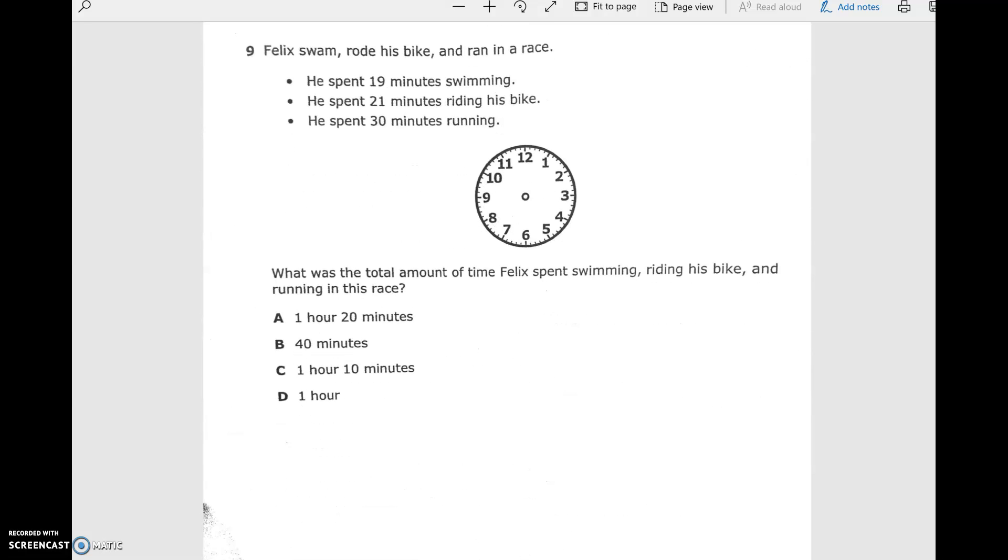Felix swam, rode his bike, and ran in a race. He spent 19 minutes swimming, 21 minutes riding his bike, and 30 minutes running. What was the total amount of time that he spent swimming, riding his bike, and running the race? I think it's easiest for us. We were just getting into this when we left school. I think it's easiest just to go ahead and add up the minutes, and then we'll look at how much time that is. 9 plus 1 is 10.